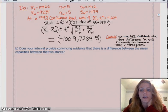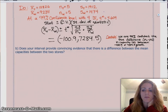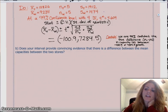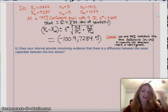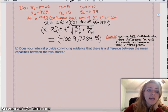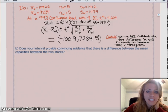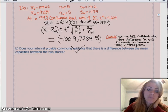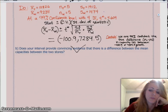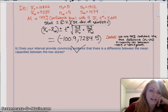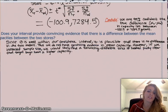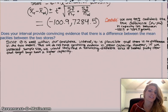Then conclude in context. We're 99% confident the true difference, Target minus Walmart, in capacity lies between negative 100.9 and 7,284.5 grams. The second question, does your interval provide convincing evidence that there's a difference between the mean capacities? Honestly, I mean, it's likely, but 0 is in this interval, and that means it is a statistically likely possibility that the true mean could be 0. So, we can't exclude that. Although, the evidence was pretty obvious that Target has a higher capacity, so if we had a larger sample size, you guys would probably see that pretty quickly.